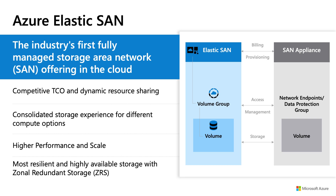Finally, we have the most resilient and highly available storage with zonal redundant storage, which is ZRS. Azure Elastic SAN leverages ZRS and LRS — locally redundant storage — to provide high availability without having to set up multiple deployments of SAN arrays and a replication policy. With ZRS, you get synchronous replication across three zones in a region, and safeguard your data in the event of a zone failure.